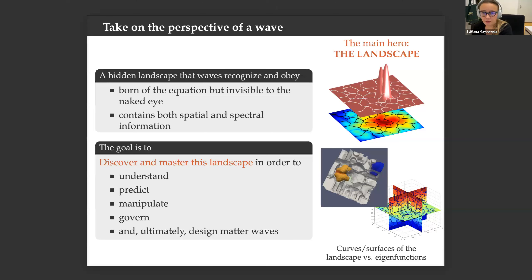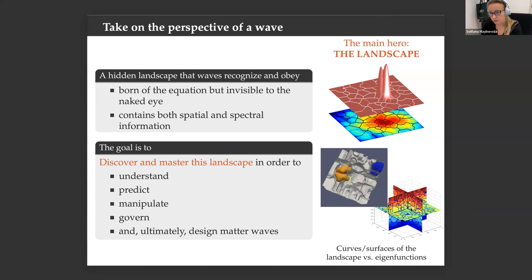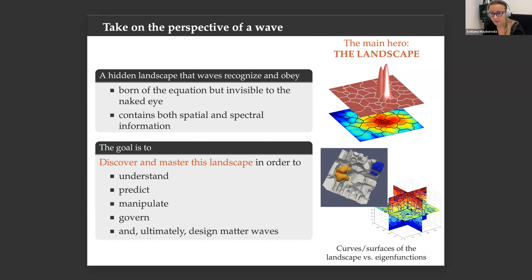The picture perceived by waves is not the same as what we see when looking at the disordered potential. The punchline of our work is that you can put on the 'goggles of a wave' and create an object — a solution to a particular PDE — which tells you where eigenfunctions will be localized, predicts the pattern of exponential decay, the energies, eigenvalues, and ultimately even Wigner functions and quantum observables.